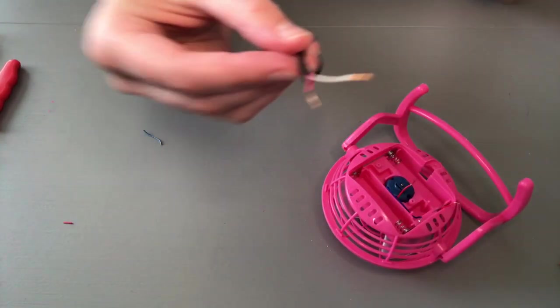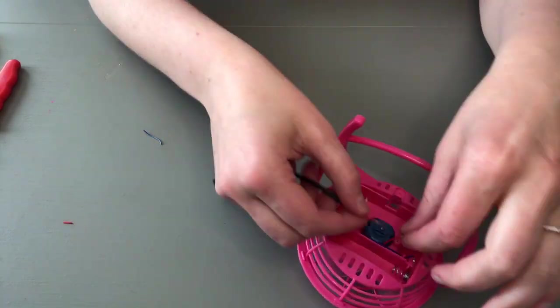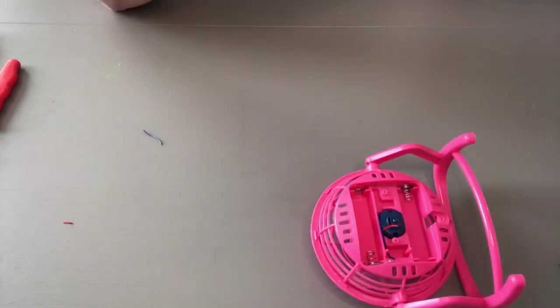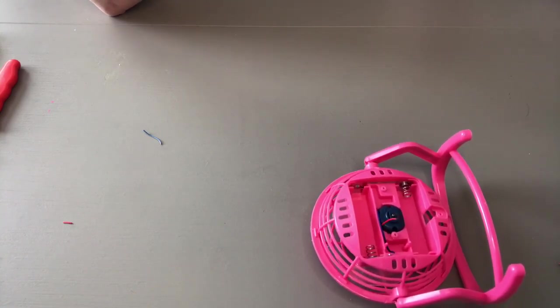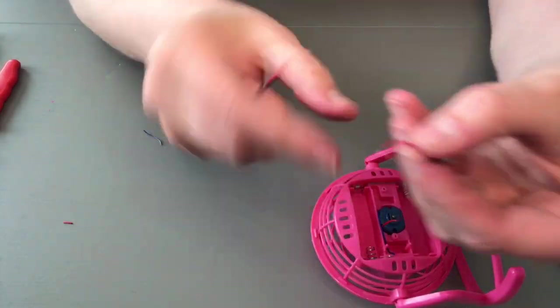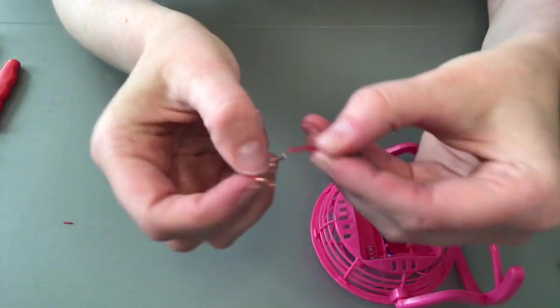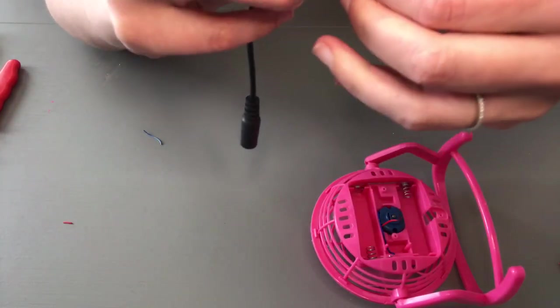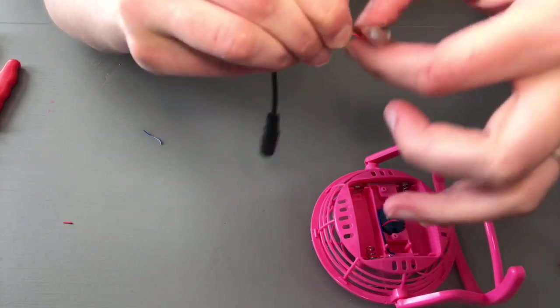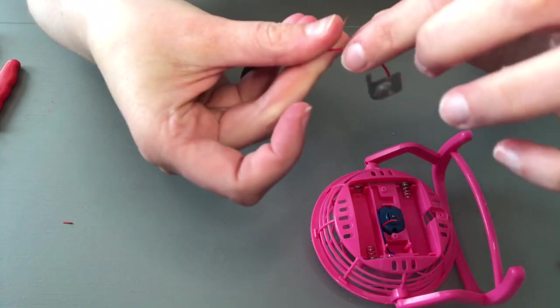This next step is the most difficult step of the entire process. You're going to take this wire here, this little teeny tiny copper, and you're going to wrap one of the wires from the stereo extension cable around it. You kind of have to pinch and twist to make it really tight.